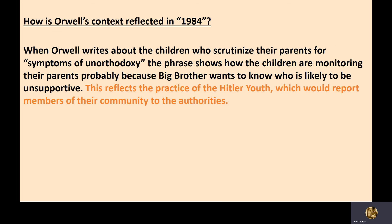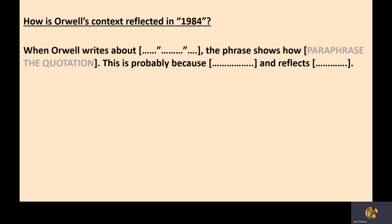When Orwell writes about — you could choose the violent boys, the nuclear bombs, or 'war is peace' — there are a few options that reflect Orwell's context, his life and times. So, two things to do: finish those four sentences on dystopian elements of chapter two, and write a paragraph on how Orwell's context is reflected in 1984.